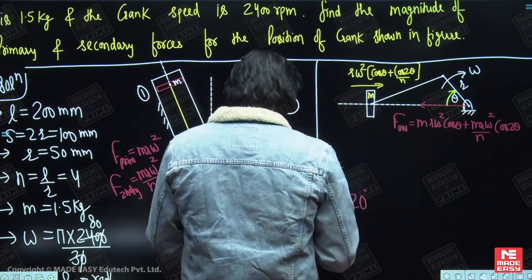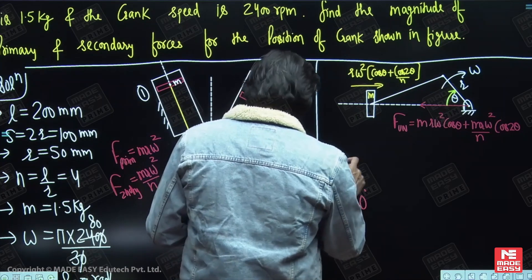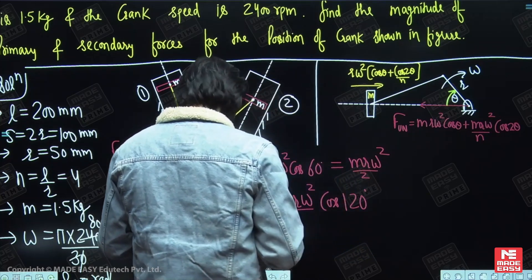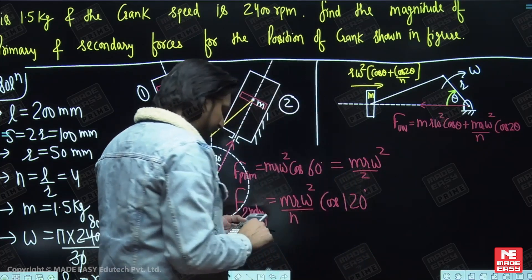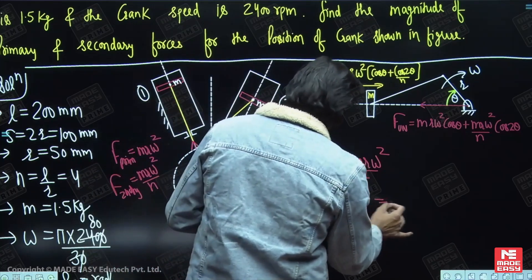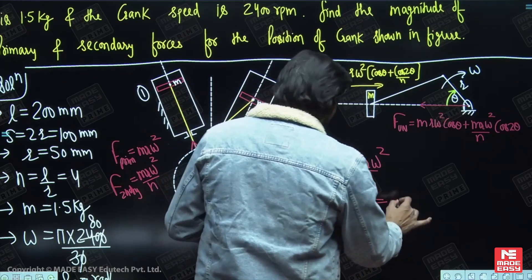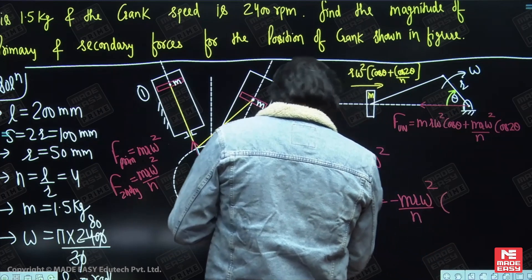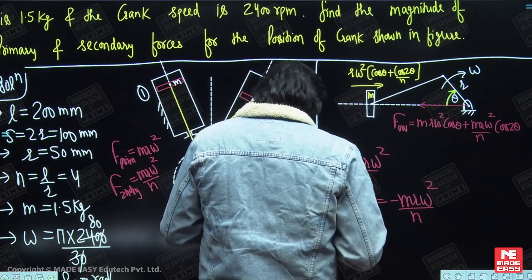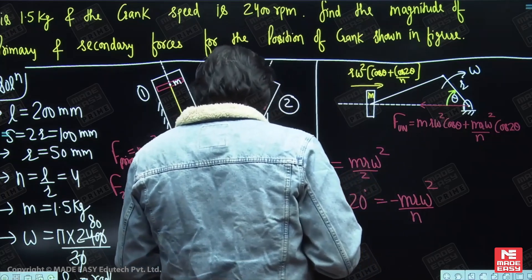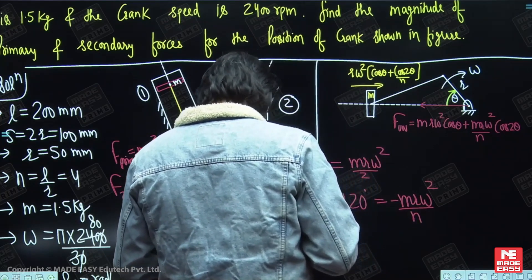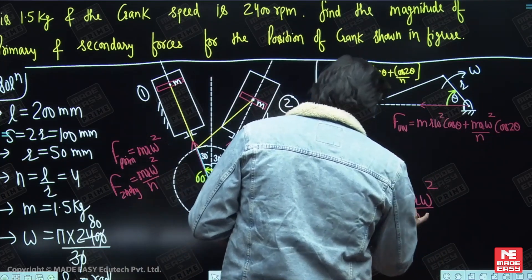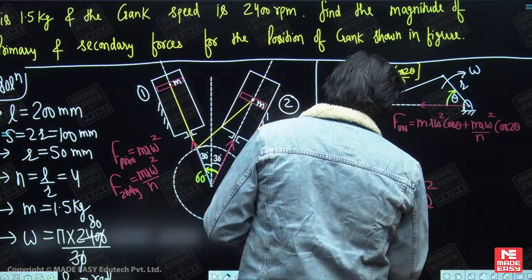You can simplify it: cos(60°) is 1/2 only. So the primary force for the second cylinder is m·r·ω²/2, and cos(120°) gives minus 1/2, so the secondary force for the second cylinder is −m·r·ω²/(2n).